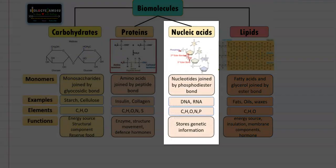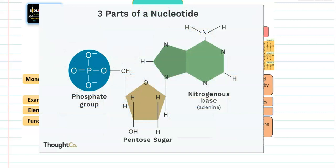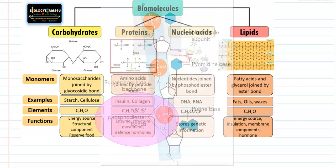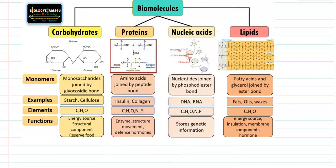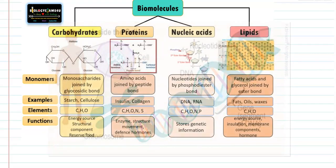The last biomolecule is nucleic acids, made up of monomers called nucleotides joined by a phosphodiester bond. Examples include DNA and RNA. Their elemental composition includes nitrogen and phosphorus in addition to carbon, hydrogen, and oxygen. The main role of nucleic acids is to store genetic information — the genetic blueprint of a cell is stored inside the nucleic acid in the form of DNA.